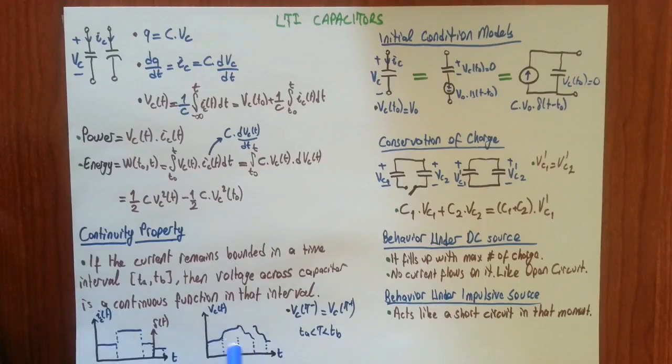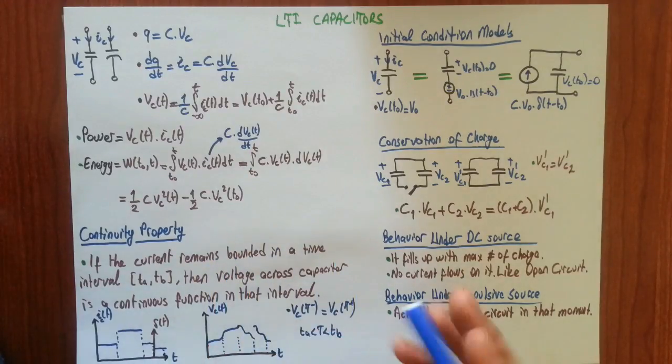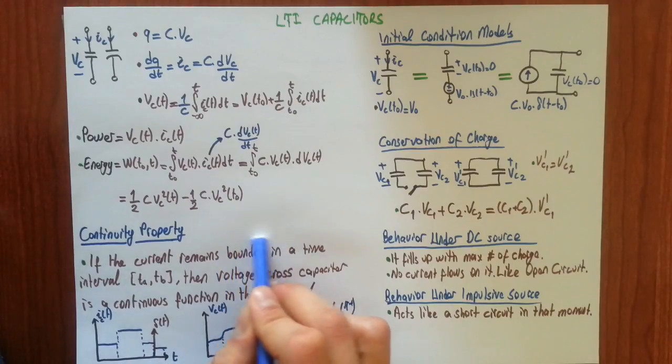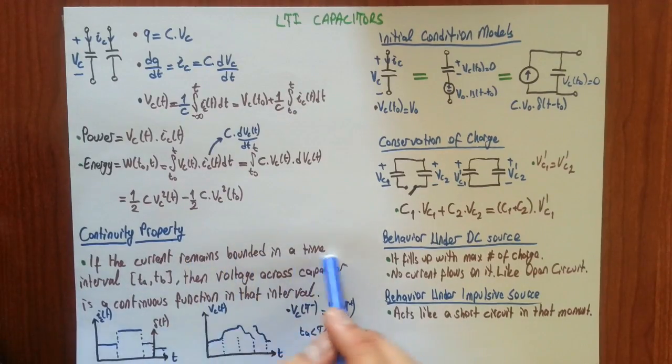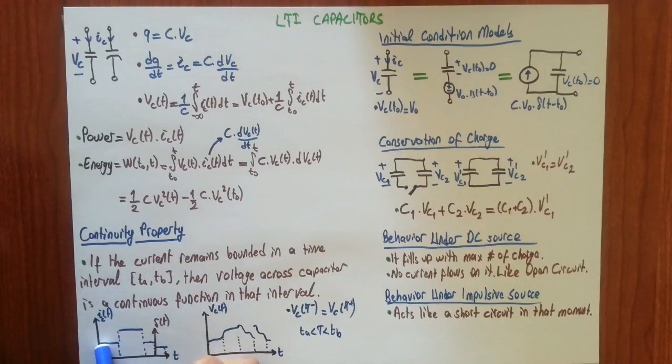I have drawn some graphs to make this statement clear. All sources other than impulsive sources are called bounded sources. If the current is not delta-valued, it's called bounded naturally. If the current remains bounded, then voltage across capacitor is always continuous. Here we have a current source supplying these currents, and here we have a voltage graph, voltage across capacitor.